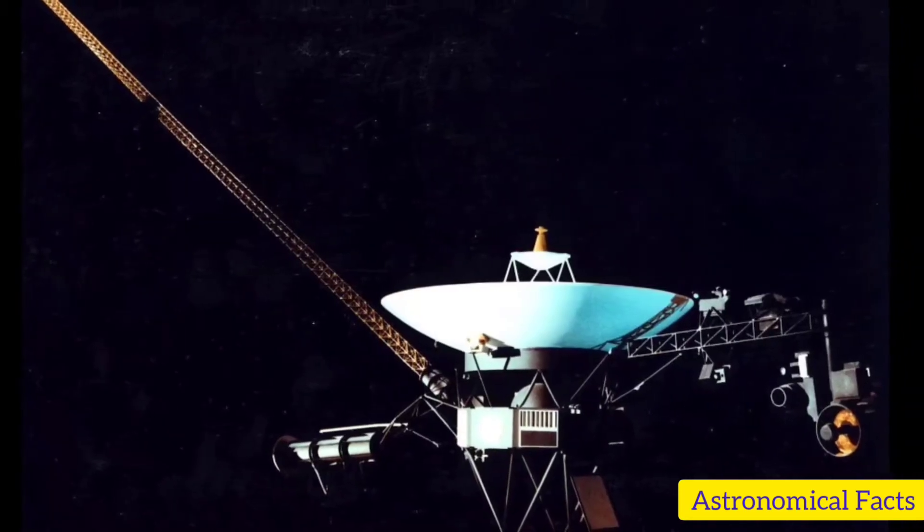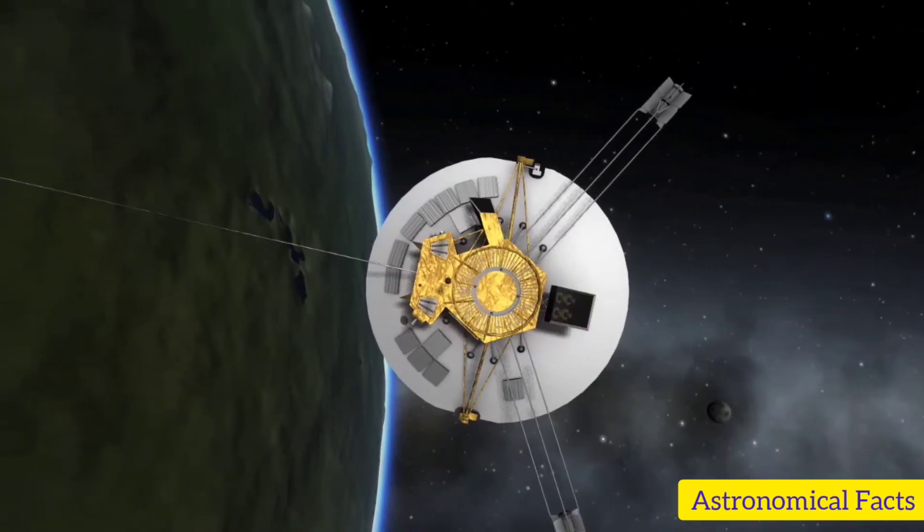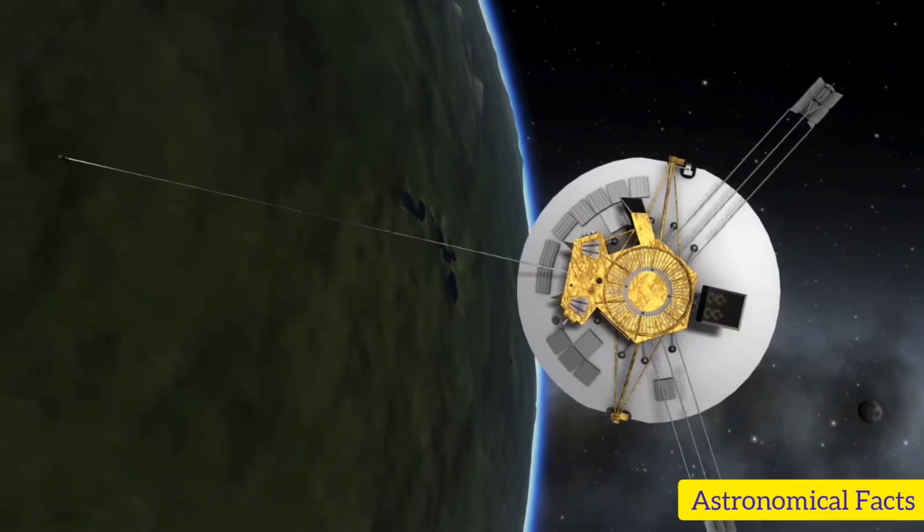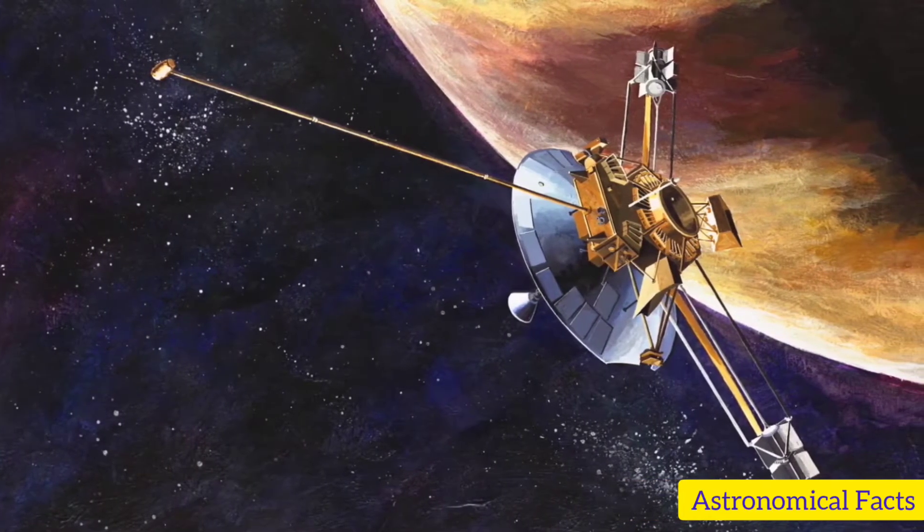Pioneer 10 is the third probe launched after Voyager 1 and Voyager 2. Pioneer 10 is an American space probe, launched in 1972 and weighing 258 kilograms, that completed the first mission to the planet Jupiter.